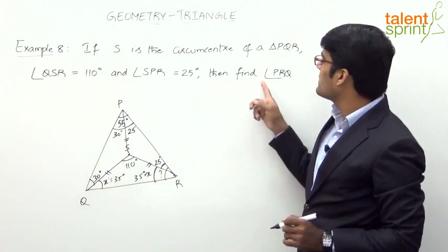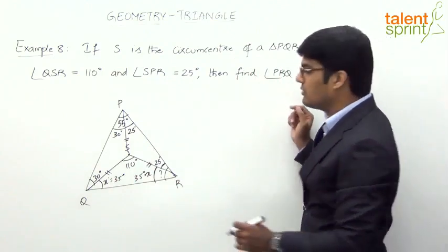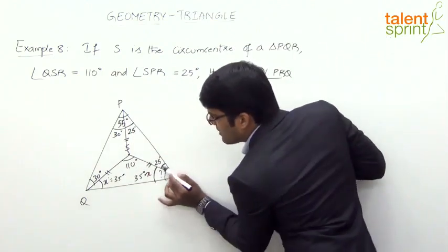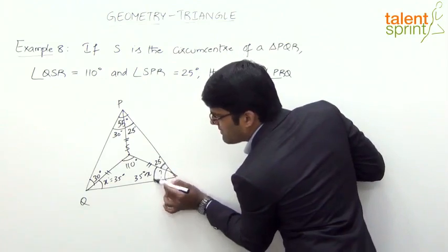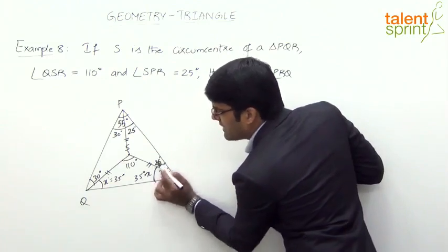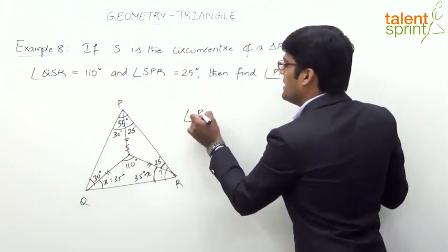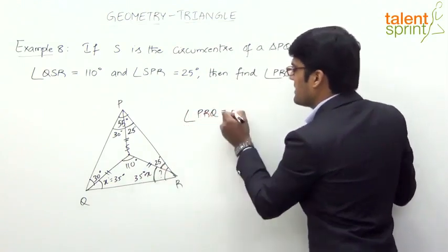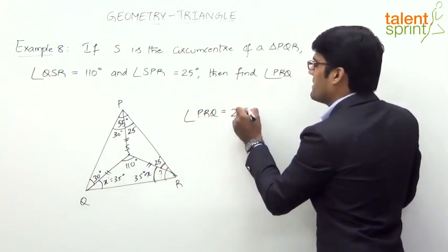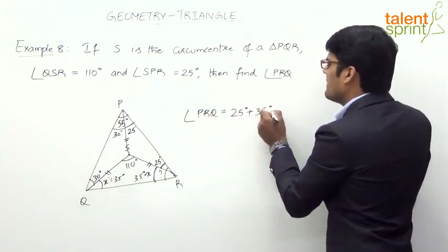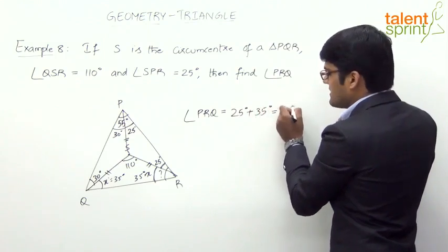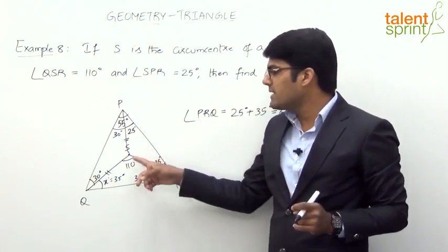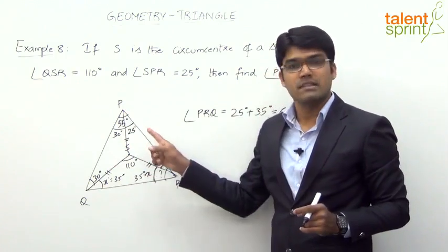The requirement of the question is angle PRQ. This part of angle R is 25 degrees and this part here is 35 degrees. So angle PRQ equals 25 plus 35, which is 60 degrees.